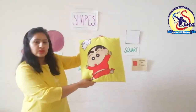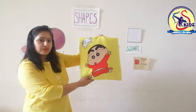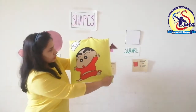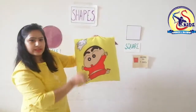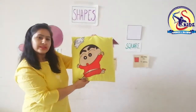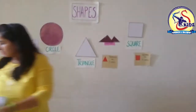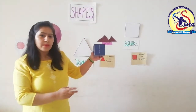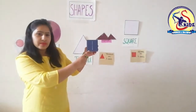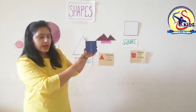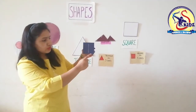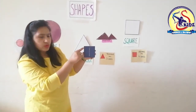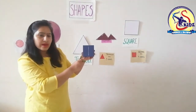This is a cushion. What is the shape of this cushion? It is square in shape — it has four sides. This is a box. What is the shape of this box? It is square in shape. Anything which has four sides is square in shape.